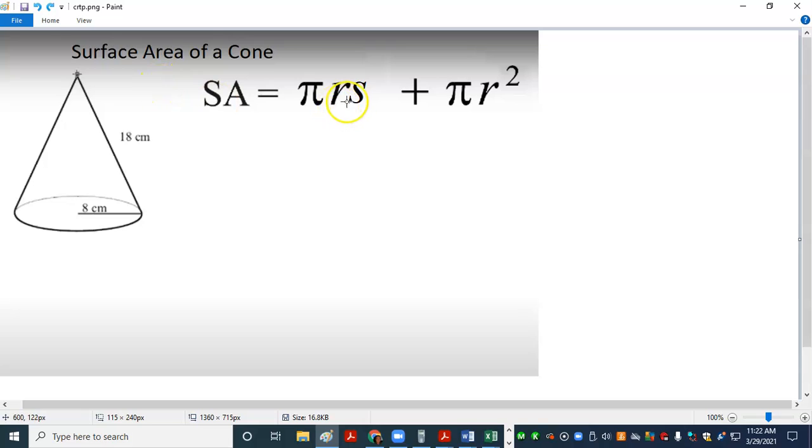So we have pi times the radius times the slant height, and then we're going to add to it pi r squared, which is actually the area of the circle on the bottom. That's that familiar formula for area of a circle. So we're going to add these two things together, and it's going to give us the total surface area of the cone. If we were wrapping this cone in paper and making a circle for the bottom, what is the total area of the wrapping paper that we need? This is the formula we're going to use.